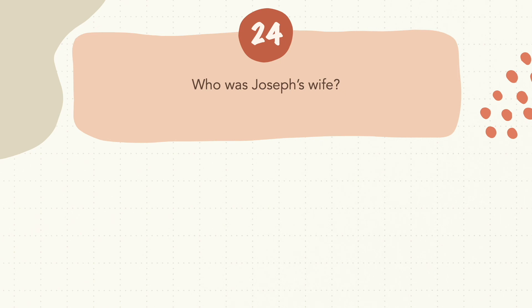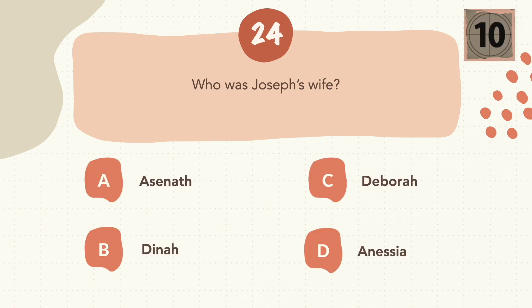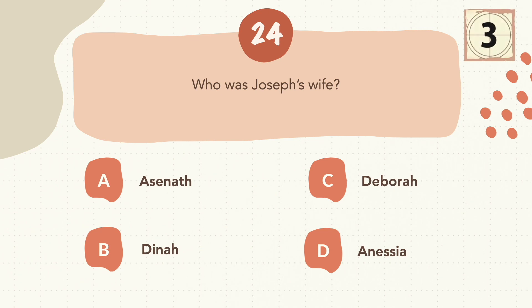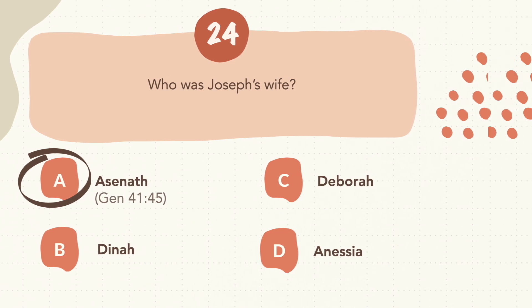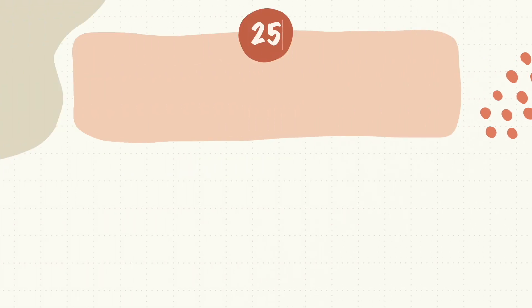Question 24: Who was Joseph's wife? The correct answer is A, Asenath.